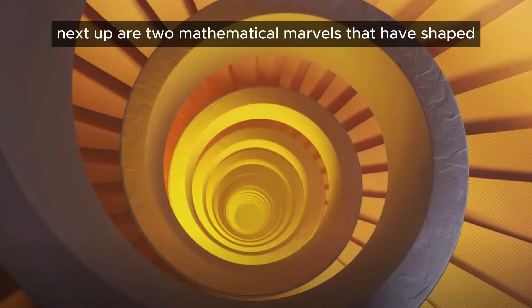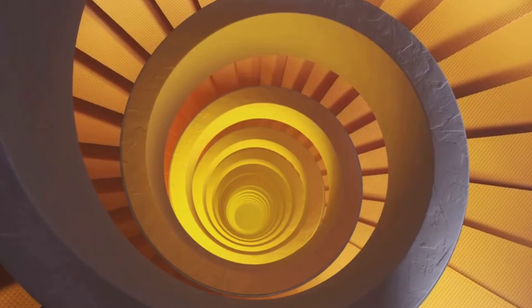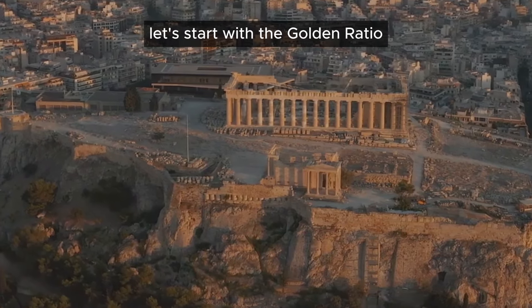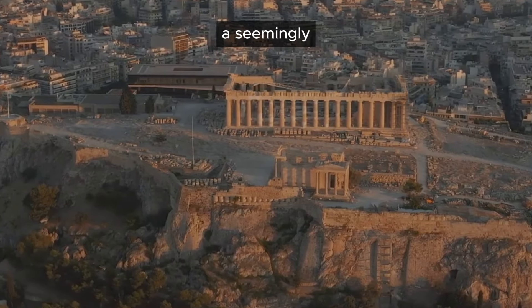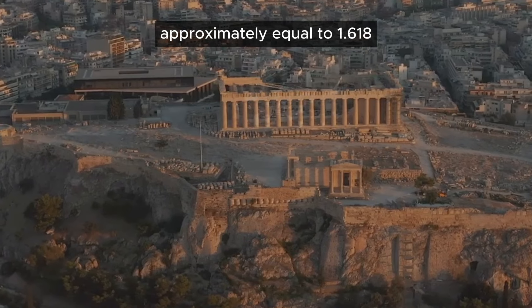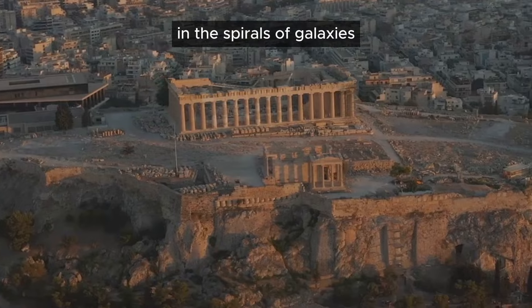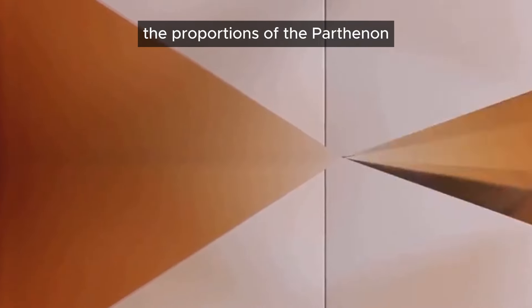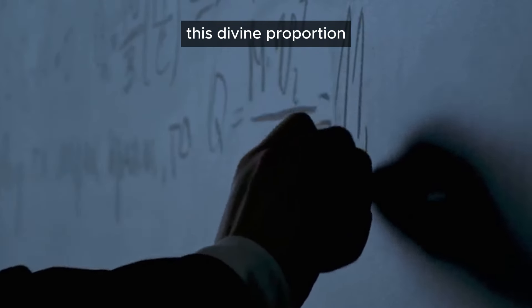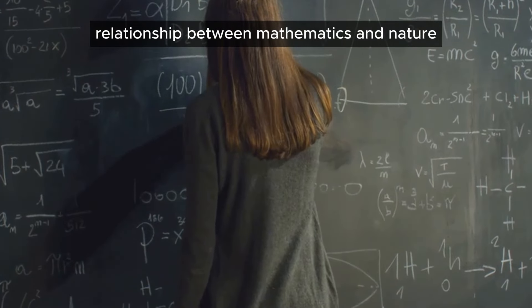Next up are two mathematical marvels that have shaped our understanding of mathematics and the world around us, the Golden Ratio and Euler's formula. Let's start with the Golden Ratio, a seemingly magical number approximately equal to 1.618. Discovered by the ancient Greeks, it's found everywhere, in the spirals of galaxies, the proportions of the Parthenon, even in the arrangement of seeds on a sunflower. This divine proportion, as some call it, is a testament to the harmonious relationship between mathematics and nature.